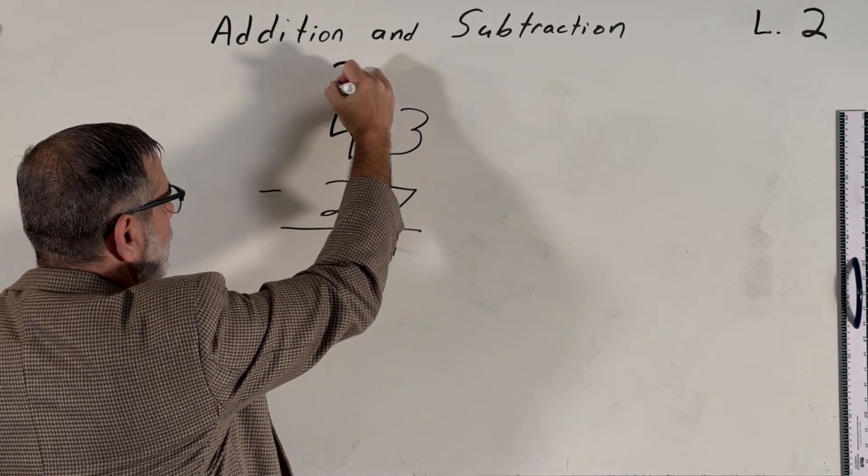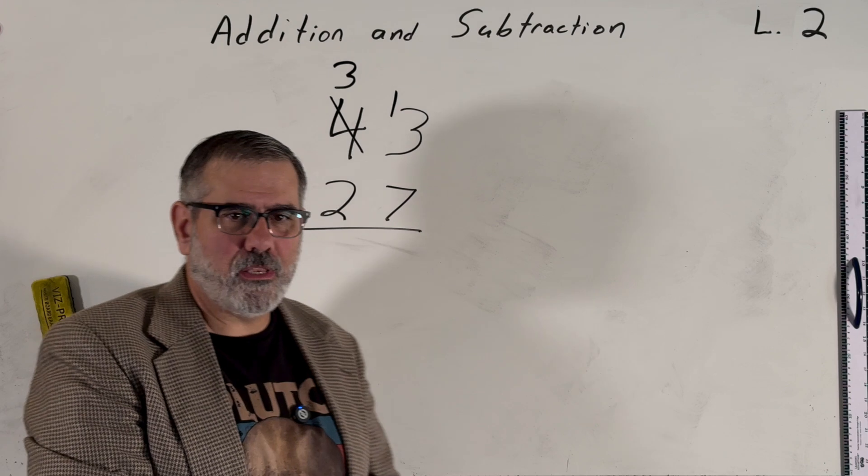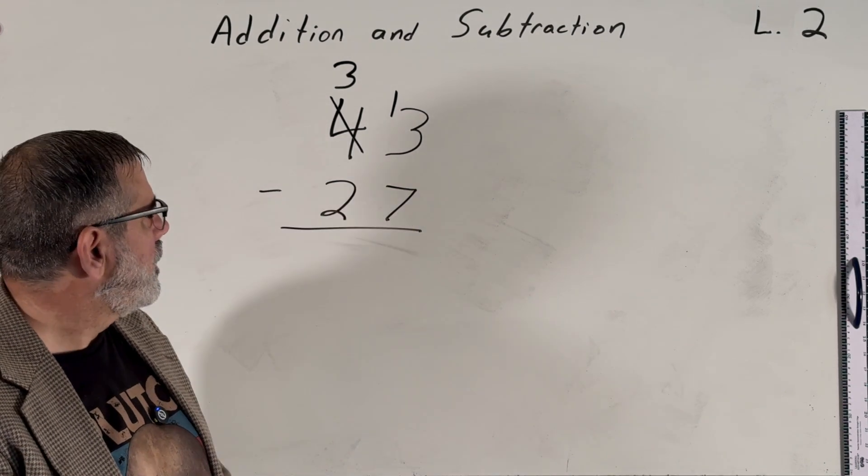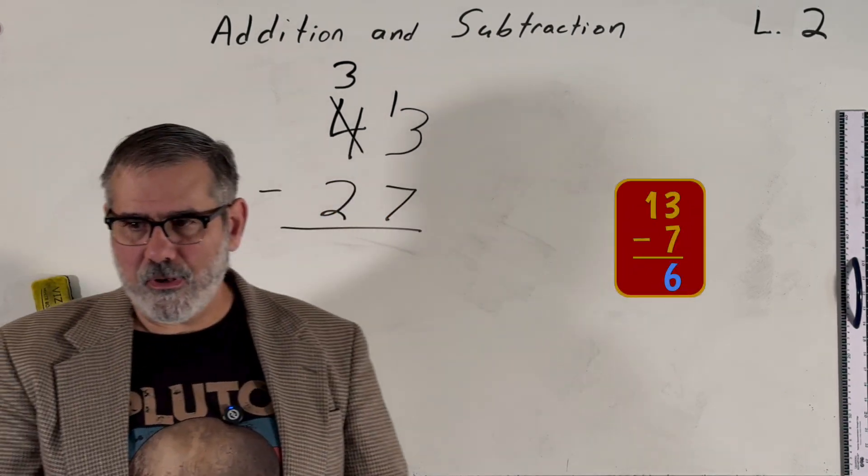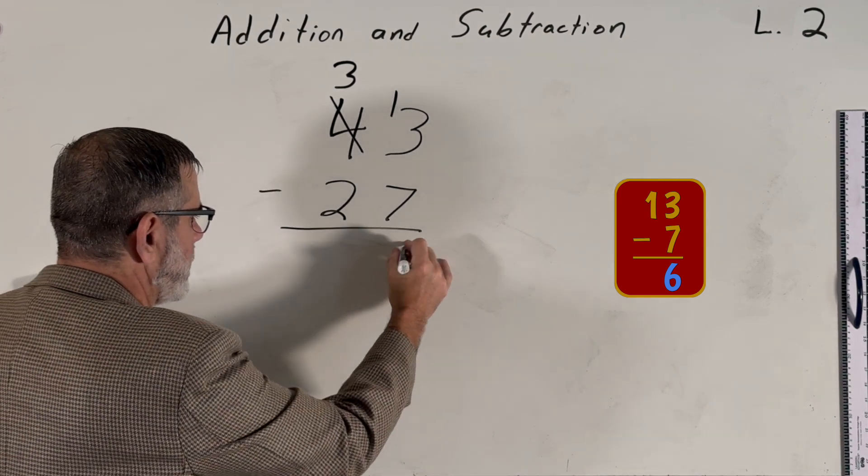So we can borrow one of those tens, giving us 10 more ones for a total of 13 ones. So we'll borrow one from here. We'll strike out the 4, and we'll decrease it to a 3. And we'll put a little 1 up here to signify that we've added 10 ones to our pile. Now we have 13 minus 7. Now that we can do. And through multiplication facts or patterns, you'll recognize that 13 minus 7 is 6.